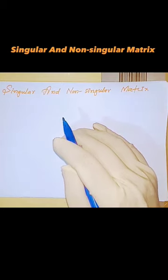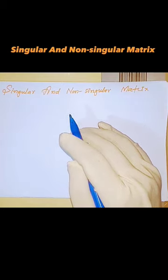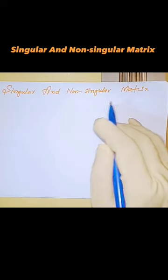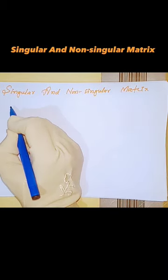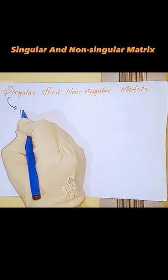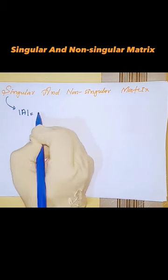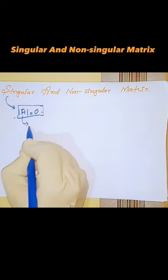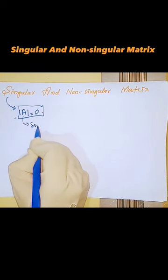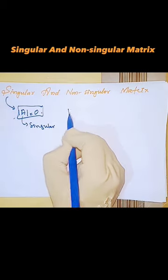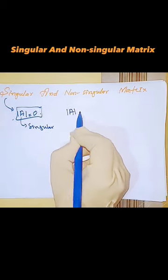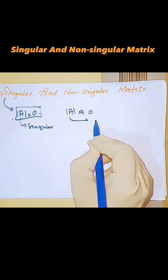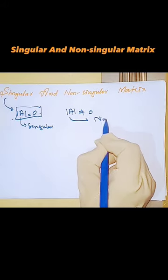Assalamu alaikum everyone. In this video we have checked the singular and non-singular matrix. For the singular matrix, the determinant of X is equal to zero. When the determinant of a matrix does not equal zero, we can say that the matrix is non-singular.